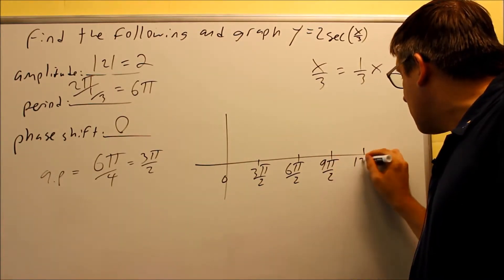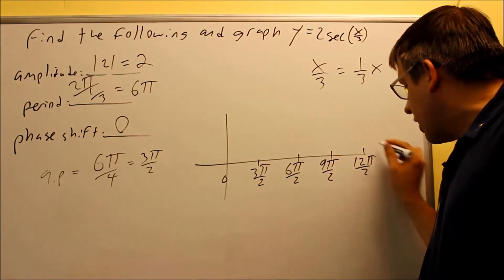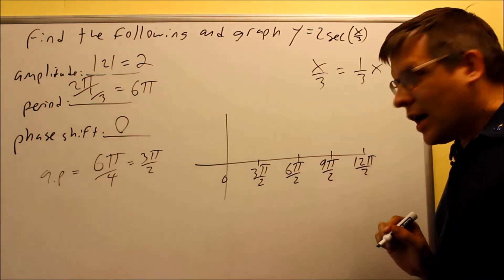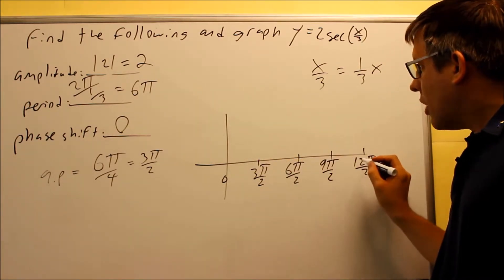And add another one, that's going to be 12π over 2, or again, that can be simplified down to 6π. So here are all my key points.